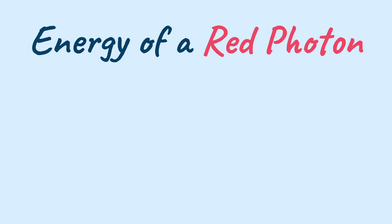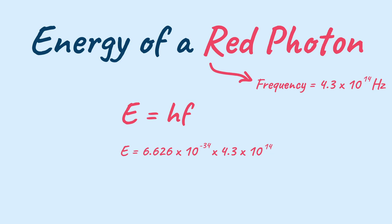So now let's take an example to find the energy of a red photon. The red photon has a frequency of 4.3 into 10 to the power 14 hertz and according to the equation we just have to multiply the frequency with the Planck's constant and when we do so we get the value as 2.849 into 10 to the power minus 19 joules.